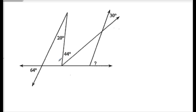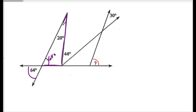A little more complicated on this one — we're looking for the missing angle. Starting from what we know: I have a vertical angle here of 64, and here it's going to be 64 degrees. Using this highlighted triangle, let's find the third angle: I have 64 and 20, which is 84 — wait, that gives 96 degrees. So 96 degrees is this missing angle here.